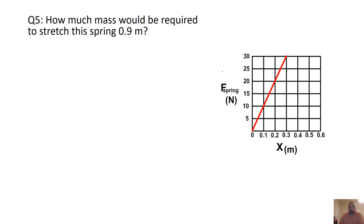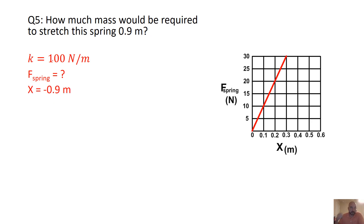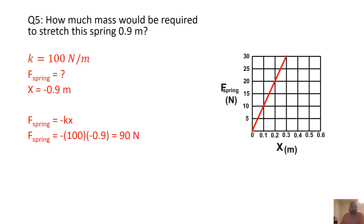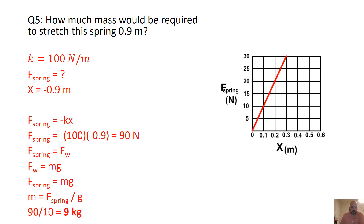How much mass would be required to stretch the spring 0.9 meters? We use K = 100 N/m from the previous slide and solve for the force in the spring with displacement of negative 0.9 meters. Plugging into the spring equation gives a spring force of 90 newtons. Then setting spring force equal to mass times gravity (F = mg), we divide 90 newtons by 10 m/s² and get a mass of 9 kilograms.